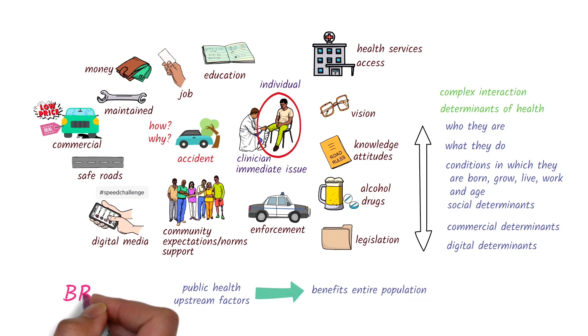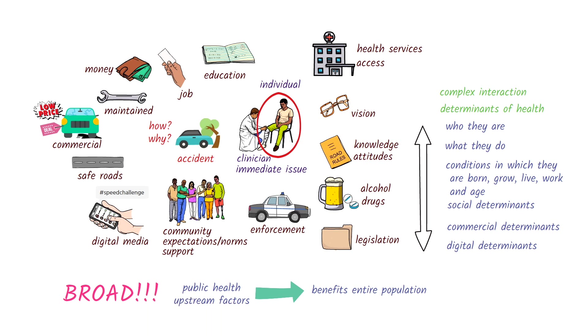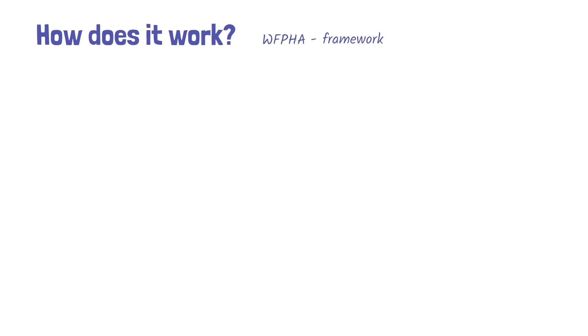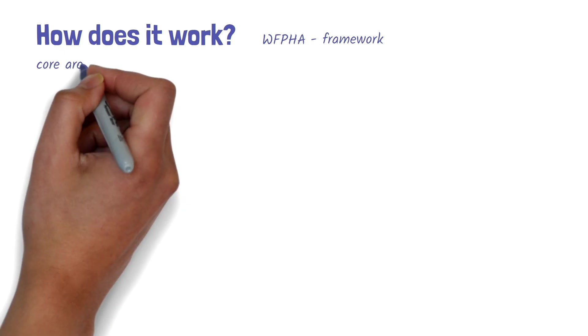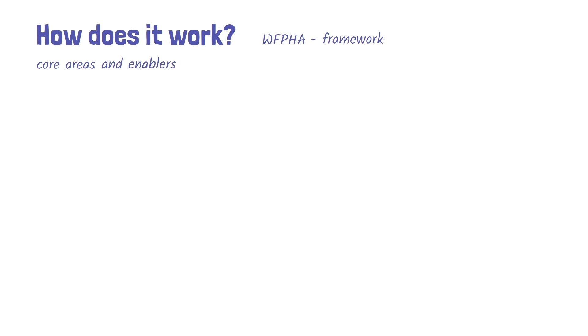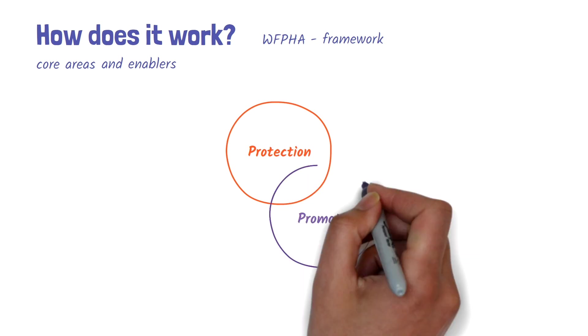This seems like a very broad and complex task, doesn't it? So let's have a look at how public health works. The World Federation of Public Health Associations has developed a useful framework to understand this. There are three core service areas of public health and a group of enablers that ensure these services can occur effectively and efficiently. The three core areas of public health are protection, promotion, and prevention.